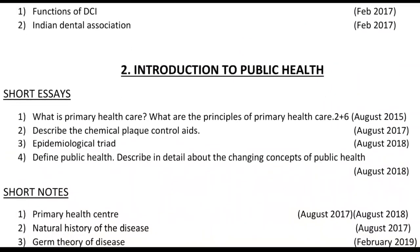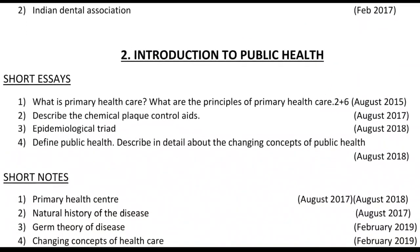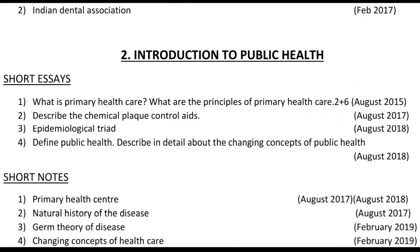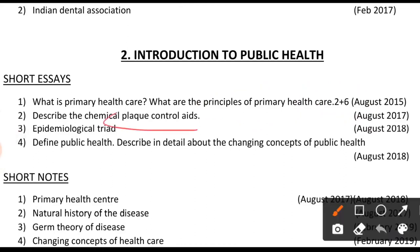The second chapter is about public health. The question is on primary health care and its principles. You need to write the definition — that carries two marks — and the six marks are for the principles of primary health care. There are four principles: equitable distribution, community participation, and the other two. Always check the marks distribution before writing.